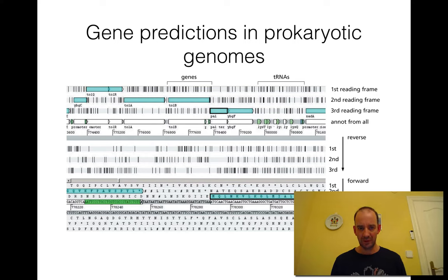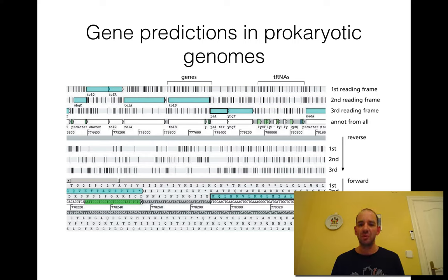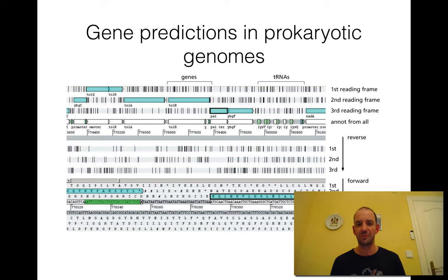Here you can see prokaryotic genomes — the genes are often quite dense, with short regions between genes, and they can go in both directions. And this is the result in eukaryotes.